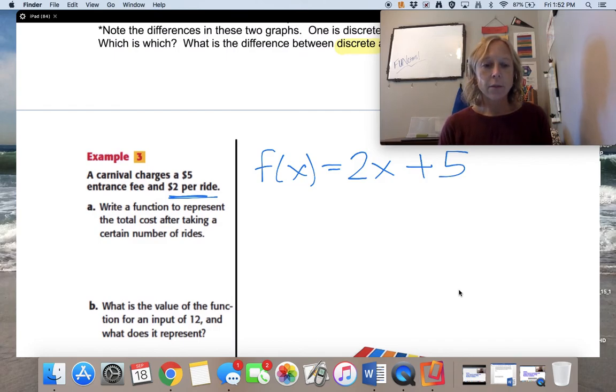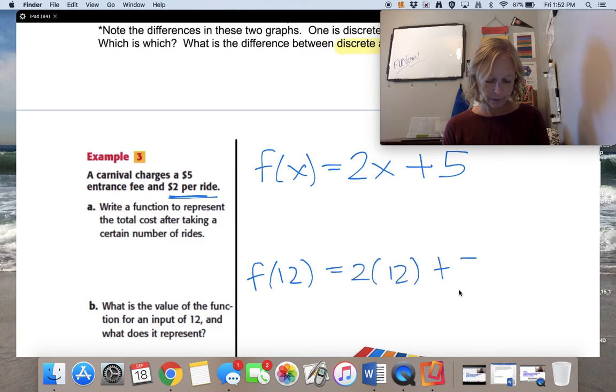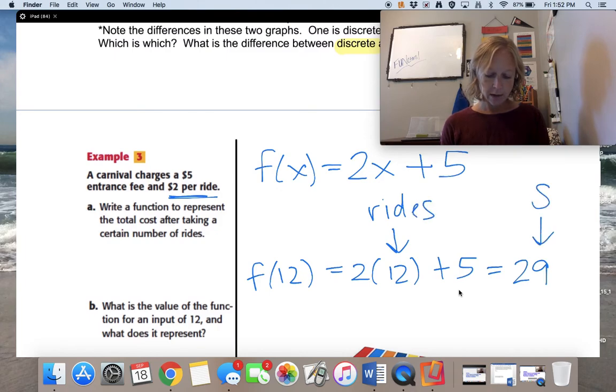It then says for letter B, what is the value of the function for an input of 12? And what does it represent? So I am going to evaluate this function for an input of 12. So 24 plus 5 is 29. And the second part is what does it represent? Well, it says it's $2 per ride. So that 12 represents how many rides. And then if I go back to the beginning, it says a carnival charges $5 entrance fee and $2 per ride. So what I just put in that 12, that was the number of rides. And what I got out this 29 is how much it's going to cost if I go on 12 rides. Now, I know if this were your homework, you would write that sentence out nice and clear.